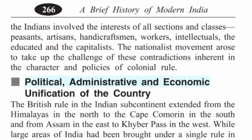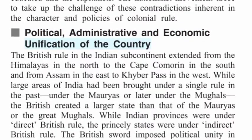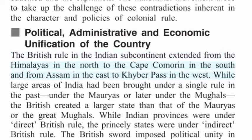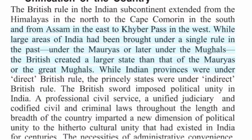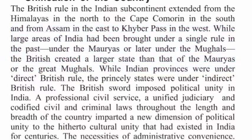Political, administrative and economic unification of the country: The British rule in the Indian subcontinent extended from the Himalayas in the north to Cape Comorin in the south and from Assam in the east to the Khyber Pass in the west. While large areas of India had been brought under a single rule in the past under the Mauryas or later under the Mughals, the British created a larger state. The British sword imposed political unity in India.